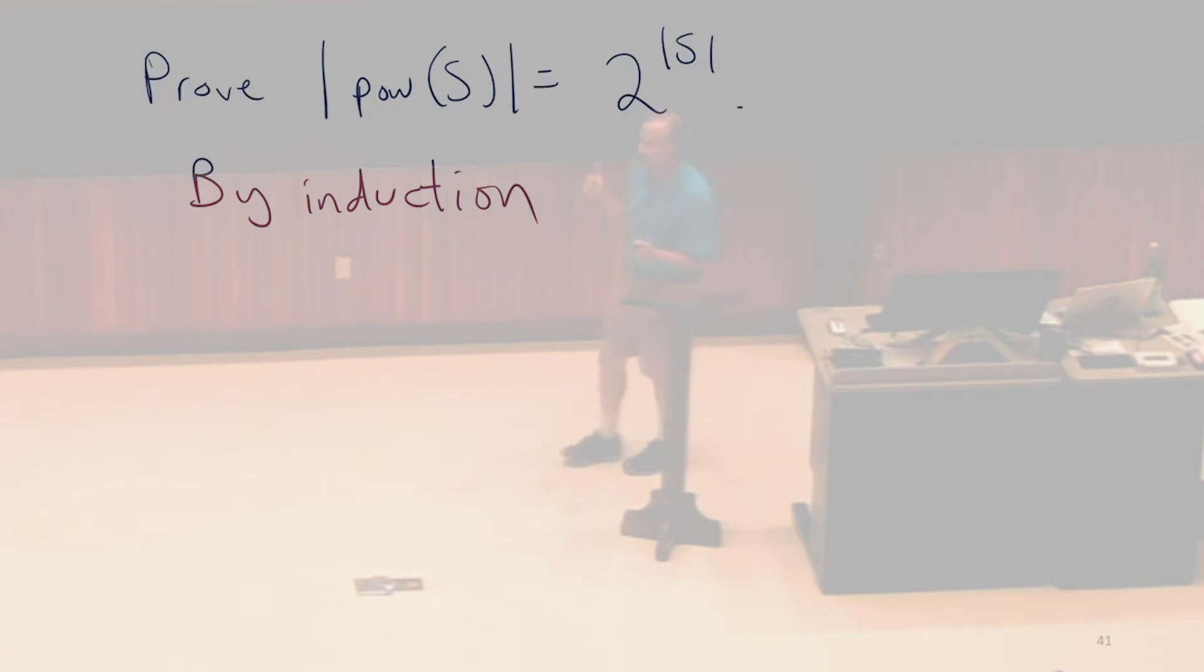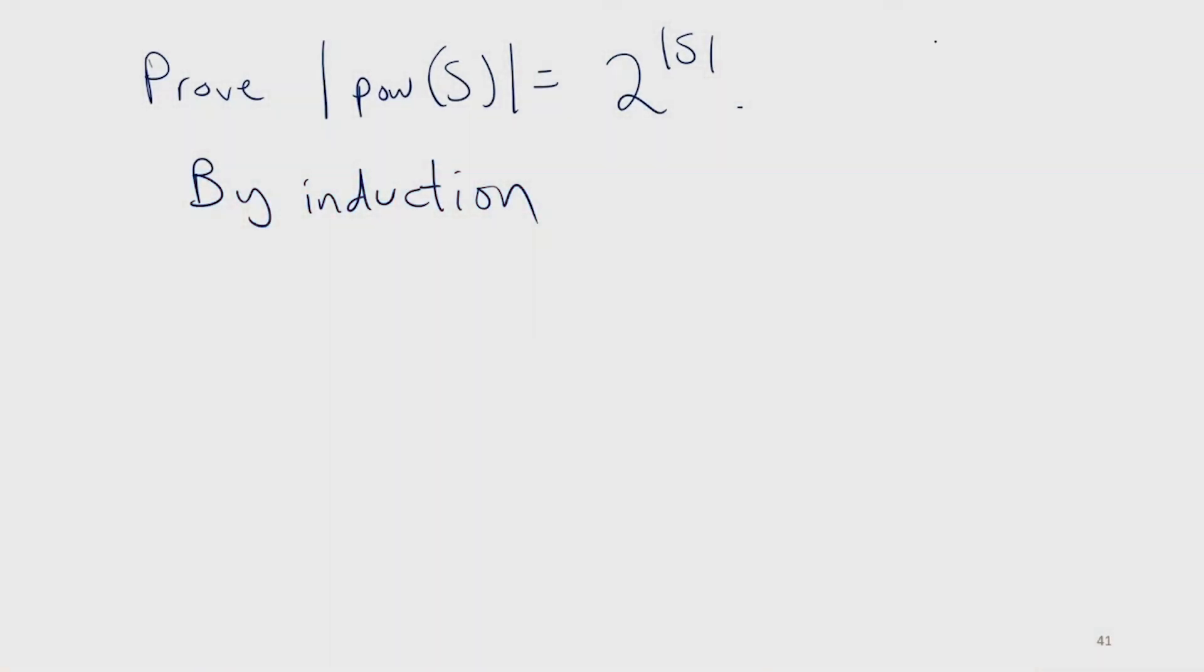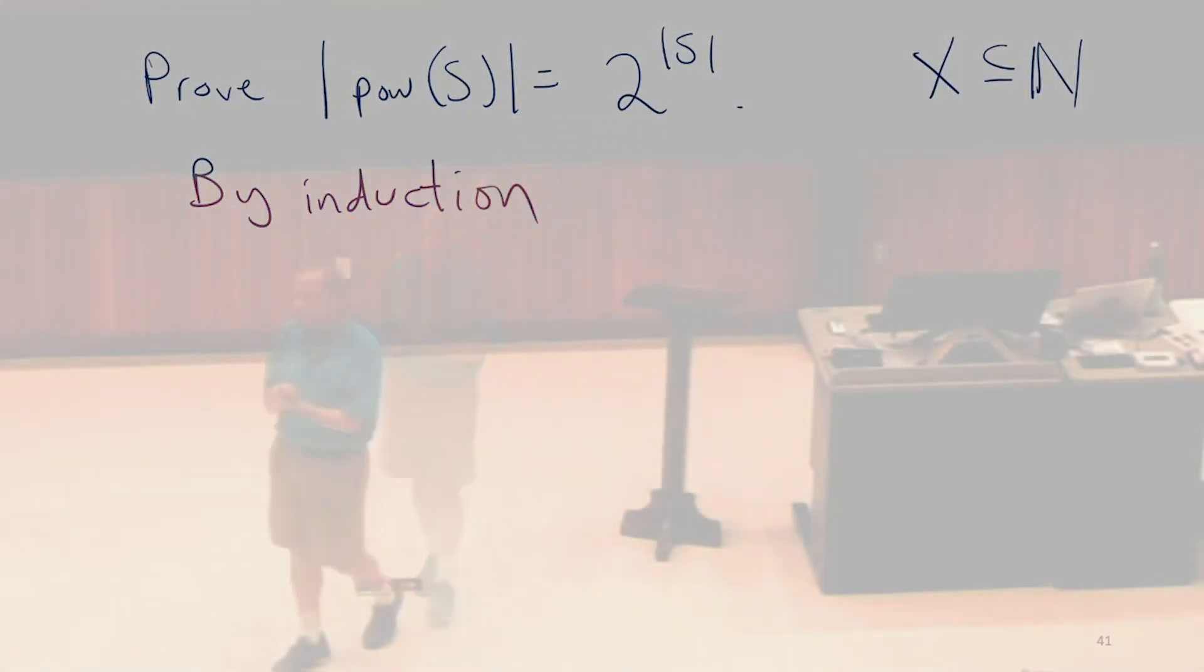Our principle of induction works on the natural numbers. We're trying to prove something about sets. Remember our principle of induction was we're proving something about some subset of the natural numbers. We don't have a principle of induction for sets yet. What is the set of the natural numbers that's going to allow us to prove something about all sets?